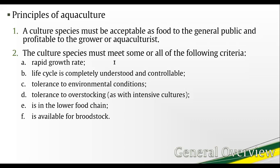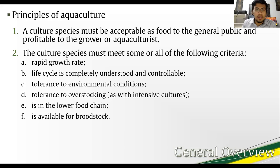Second, the culture species must meet some or all of the following criteria. The species should grow rapidly. Its life cycle must be completely understood and thus controllable. The species should be tolerant of environmental conditions, including those different from its natural habitat. It should also be able to tolerate overstocking, which is the case with intensive cultures. The species is best placed in the lower strata of the food chain; primary consumers are preferred therefore.